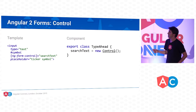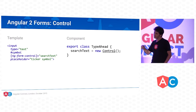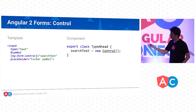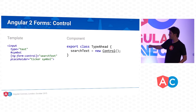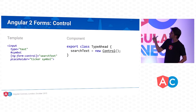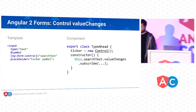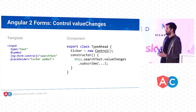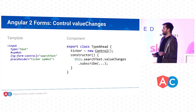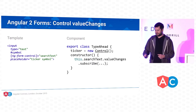Forms in Angular 2 are actually observable. We create a simple Control — a class we import — assign it on our component, and link it with ng-form-control. Notice we're not using ng-model; we're binding our input directly to this control object on the component. The control has a valueChanges property, which is an observable of value change events. Every time a new value is typed in, this observable will emit that new value to the subscription.